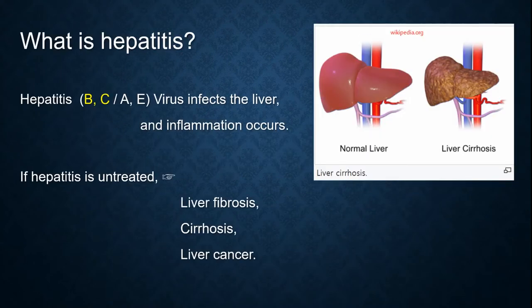Hepatitis. What is hepatitis? It is a viral infection of the liver, and inflammation occurs. If hepatitis is untreated, it may evolve into liver fibrosis, cirrhosis, or liver cancer.